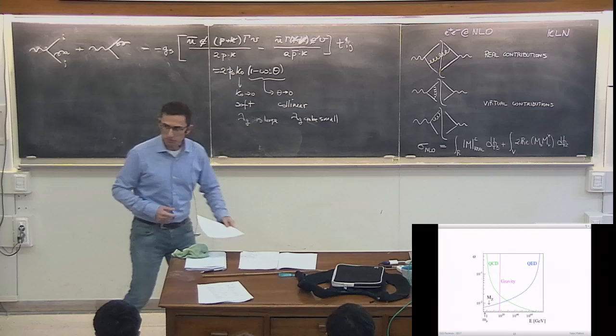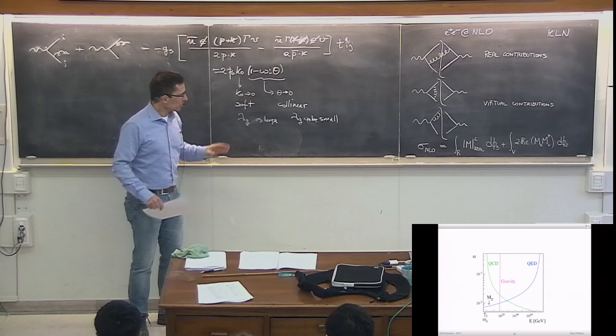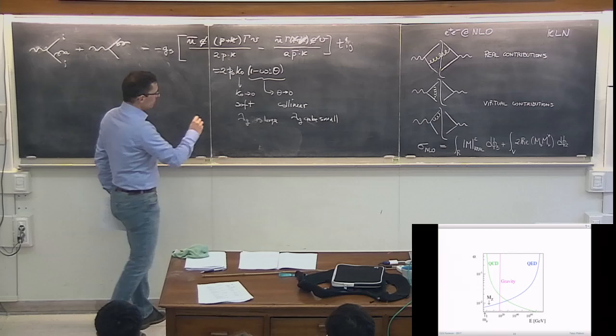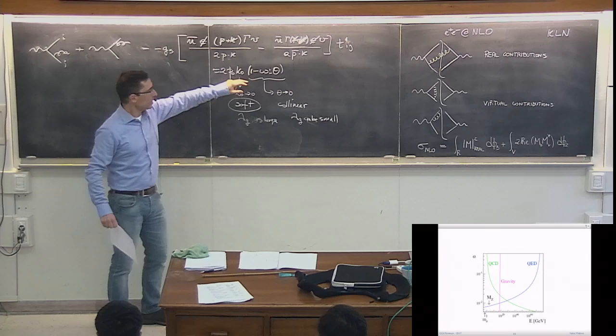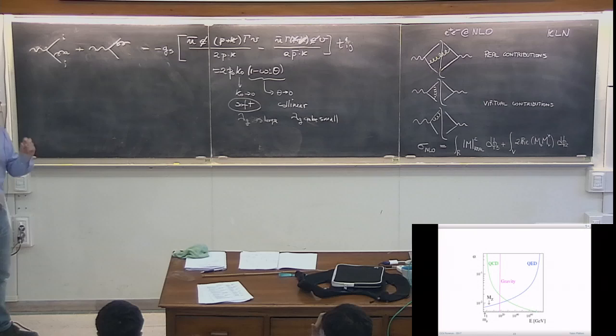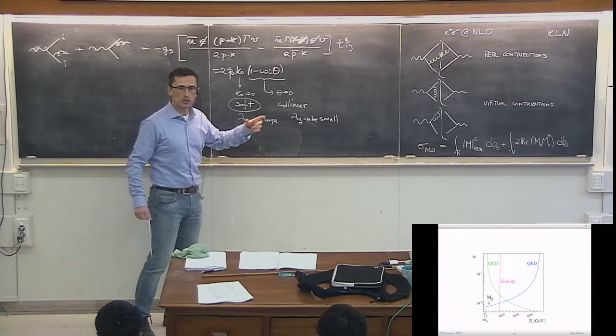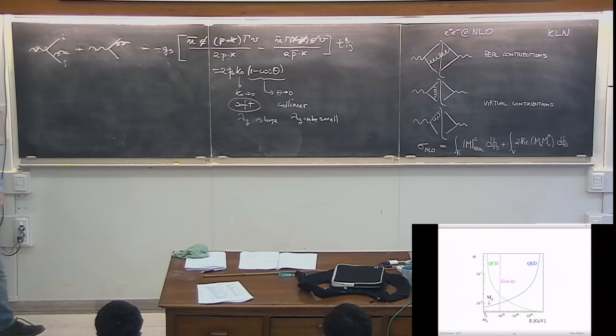We work in the soft approximation, which also contains the collinear divergence. In the soft limit I can show that even when the soft pole dominates, you always bring the collinear one with you. There is a region of phase space where radiation is both soft and collinear. Either soft or collinear gives a log; the soft-and-collinear region gives a double log — a log squared.